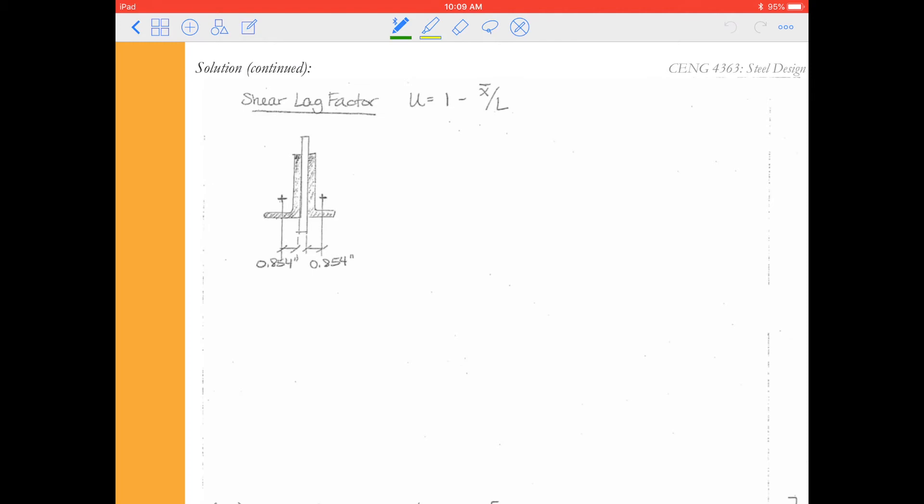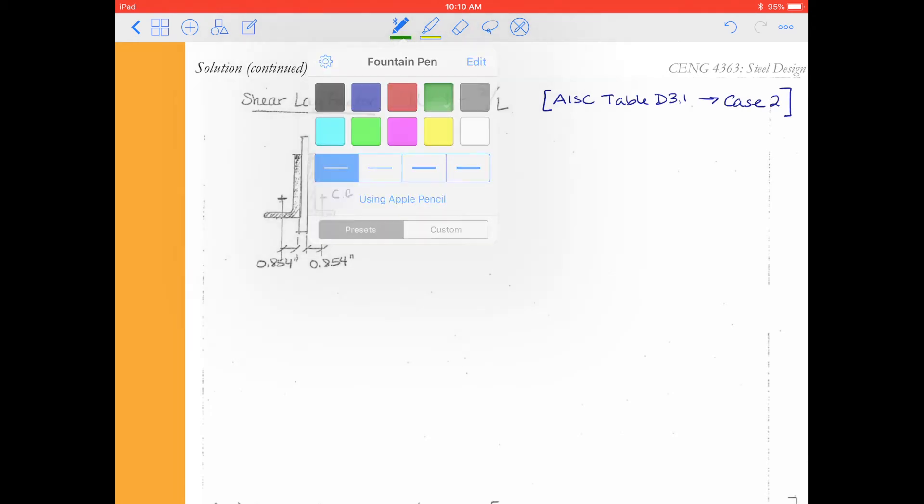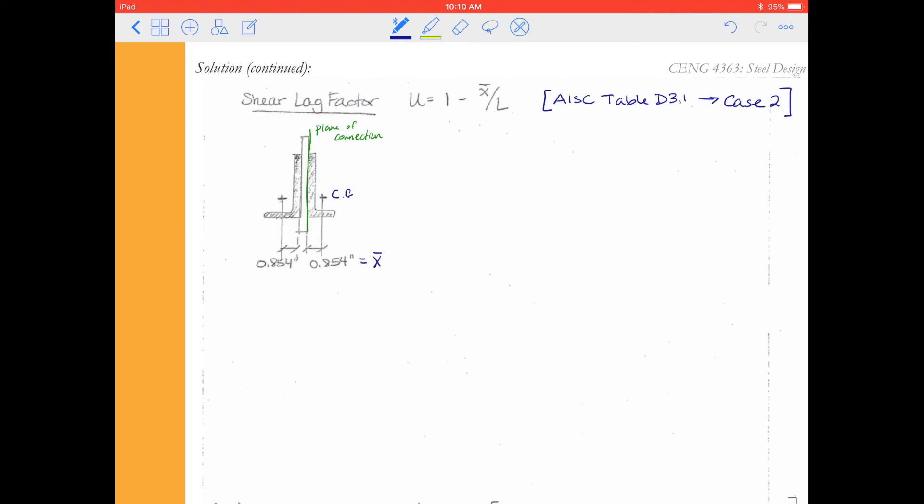u is 1 minus x̄ over L. So whenever we have shear lag, we want to consider the different scenarios. So we're going to check out table D3.1. And in particular, this is going to be a case 2. So we do not have all elements of the cross section connected. And we have the center of gravity for the angle member outside of the plane of the connection, as we describe it. So here's the plane of the connection. And our center of gravity is offset. So we want to figure out what that distance is. So that distance then becomes the x̄ that we wish to use in our equation.